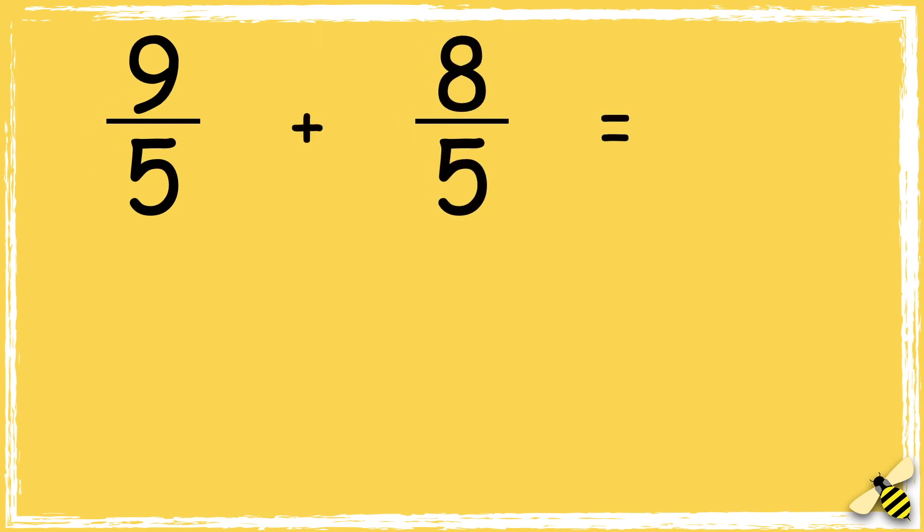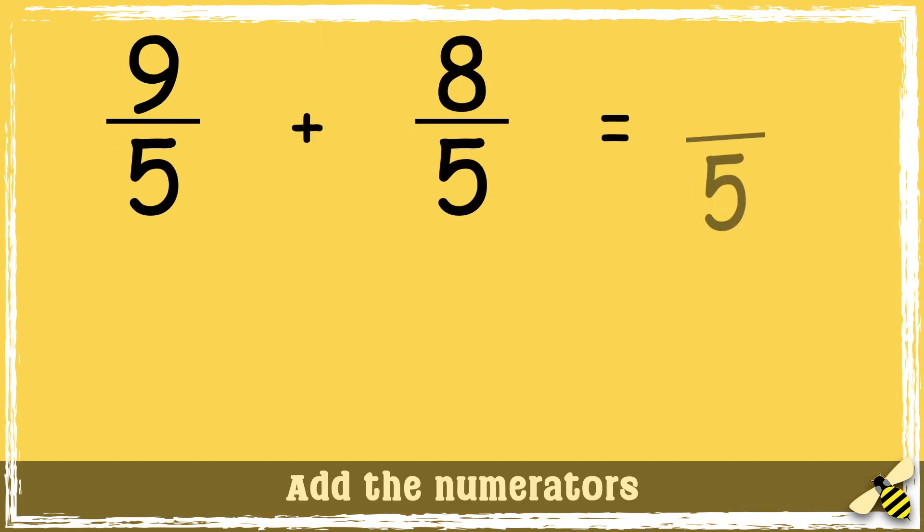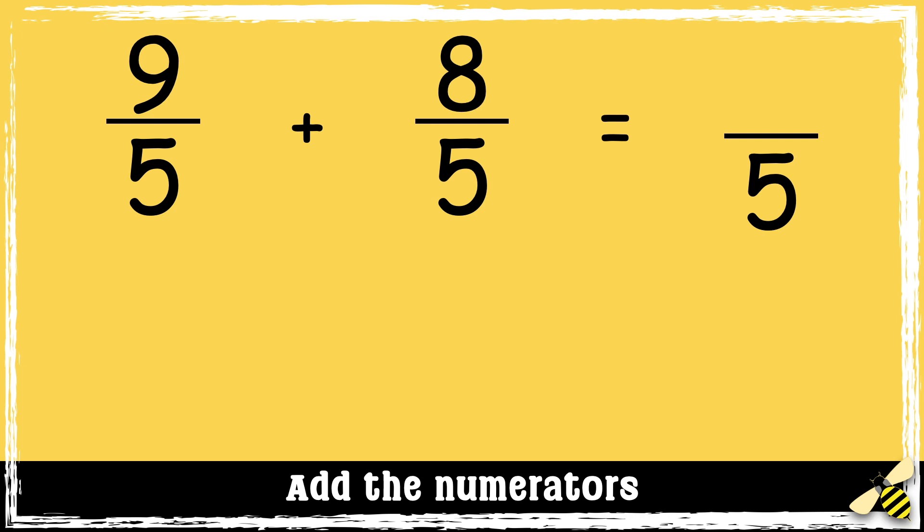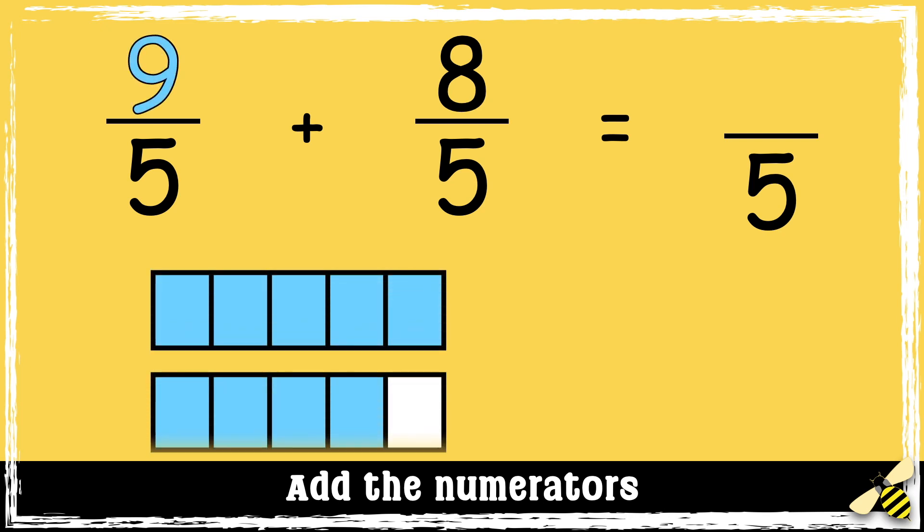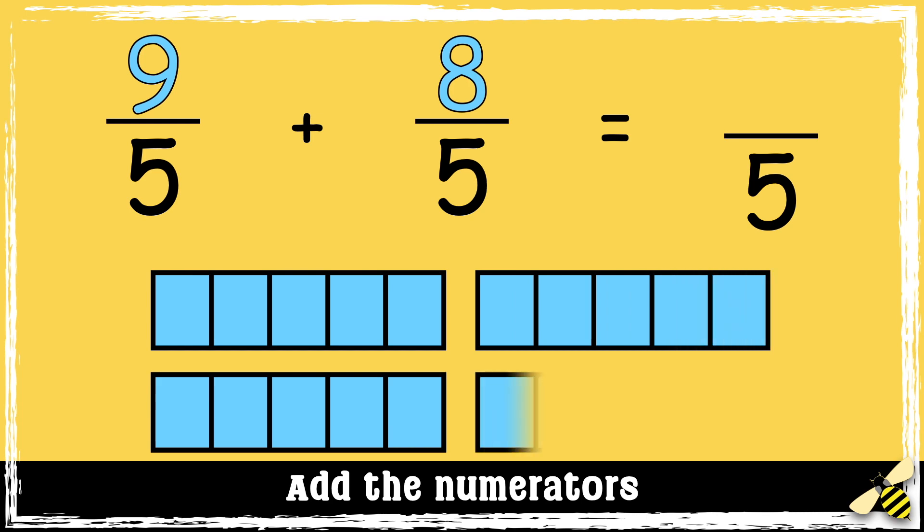Here's one more example. 9 fifths add 8 fifths. So we need to add the numerators. 9 add 8 equals 17.